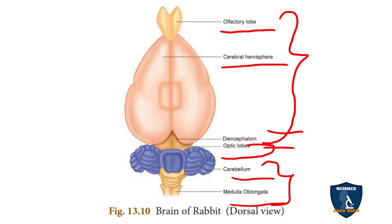There are pairs of olfactory lobes and pairs of cerebral hemispheres. The two cerebral hemispheres are connected by a membrane called the corpus callosum, which connects the right and left cerebral hemispheres.